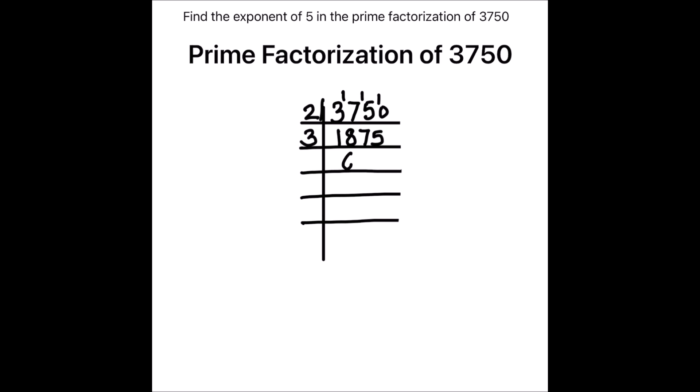Dividing by 3: working through the steps, we get 625. Now 625 is not fully divisible by 3, so we'll use 5 to divide this number.